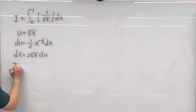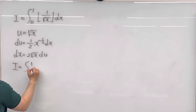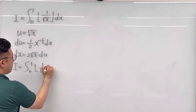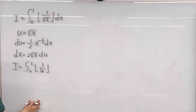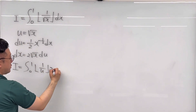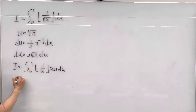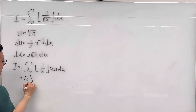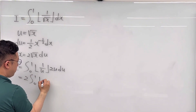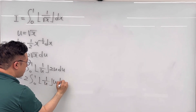Then this integral I should be the same as integral from 0 to 1 of the floor function of 1 over u. And dx was 2 times square root of x, which equals u. So 2 times u du. Pulling 2 outside, this is the same as 2 times integral from 0 to 1 of floor(1/u) times u du.